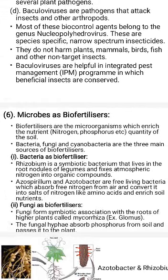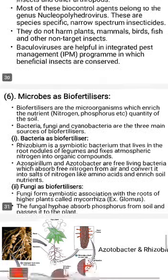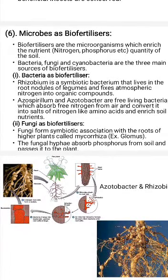Next, microbes as biofertilizers. Some microbes help in trapping atmospheric nitrogen and increasing the fertility of soil. For example, Rhizobium is a symbiotic bacteria present in root nodules of pulses like moong dal or gram. It fixes atmospheric nitrogen and increases soil fertility, so we do not need chemical fertilizers. Similarly, Azospirillum and Azobacter are free-living bacteria that absorb nitrogen from the air and convert it into nitrogen compounds like amino acids, increasing the nutrient content in the soil. Fungi also act as biofertilizers by forming symbiotic associations with roots of higher plants, called mycorrhizae — for example, Glomus — which help in absorption of phosphorus from the soil and pass it to the plant.